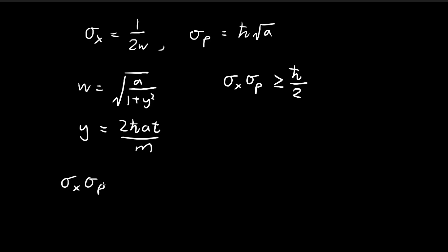Calculating this directly, we have 1 over 2w multiplied by ℏ times the square root of a. Now we're going to substitute in this expression.